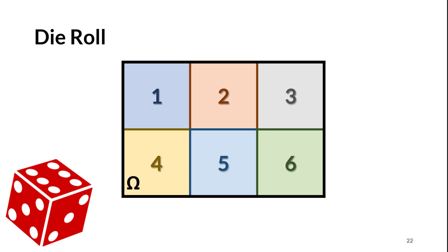Are rolls of a die mutually exclusive? Yes, they are. In one roll of a die, you can't get both a 3 and a 5 at the same time. Does this Venn diagram show an exhaustive listing of events? Yes — the outcomes 1 through 6 are the only things that can happen, with no blank or empty spaces on the diagram. Do the 6 outcomes represent a partition? Yes again, since the rolls are mutually exclusive and exhaustive, the rolls 1 through 6 form a partition.